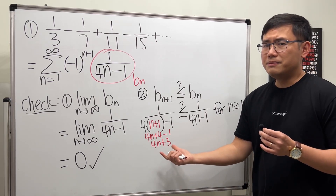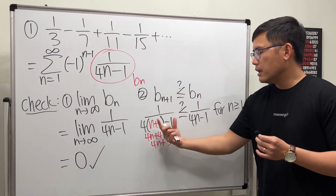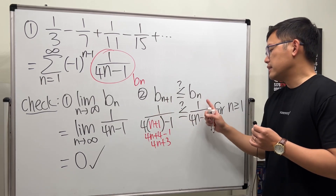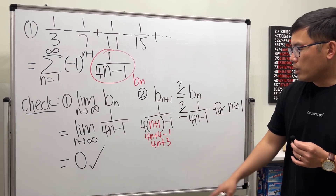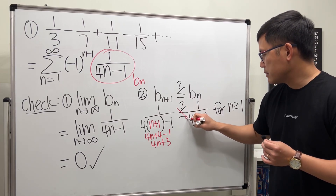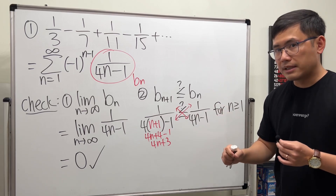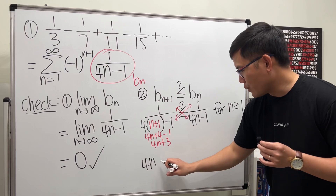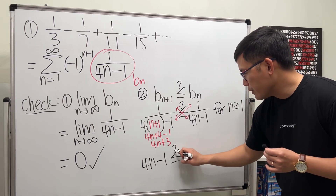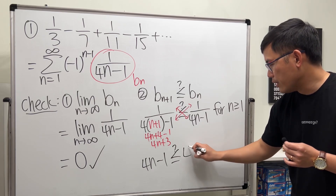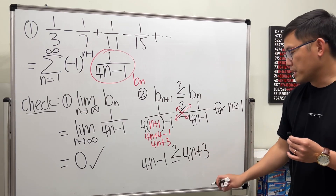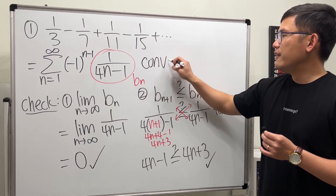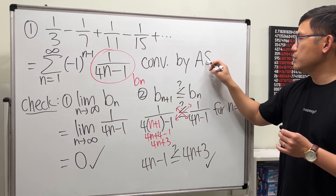It's quite clear because both fractions have 1 on top, and the denominator of bn+1 is bigger than that of bn, so bn+1 is less than bn. If you prefer, you can cross multiply: 4n minus 1 is less than or equal to 4n plus 3, which is clearly true. Therefore, this series converges by the alternating series test.